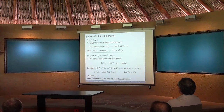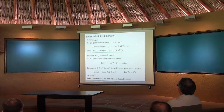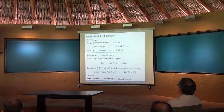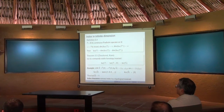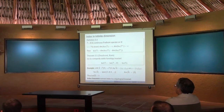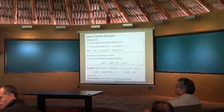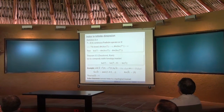An operator is called a Fredholm operator on a Hilbert space if it has finite dimensional kernel and finite dimensional co-kernel. Usually one also adds that the range is closed — though you don't really need that, you can prove it holds when the other two conditions hold. If these two are finite, you can define the index. This index has the same properties as for matrices: if I look at a homotopic deformation of my linear operator, the index doesn't change. It's some integer number, and it can be any integer.